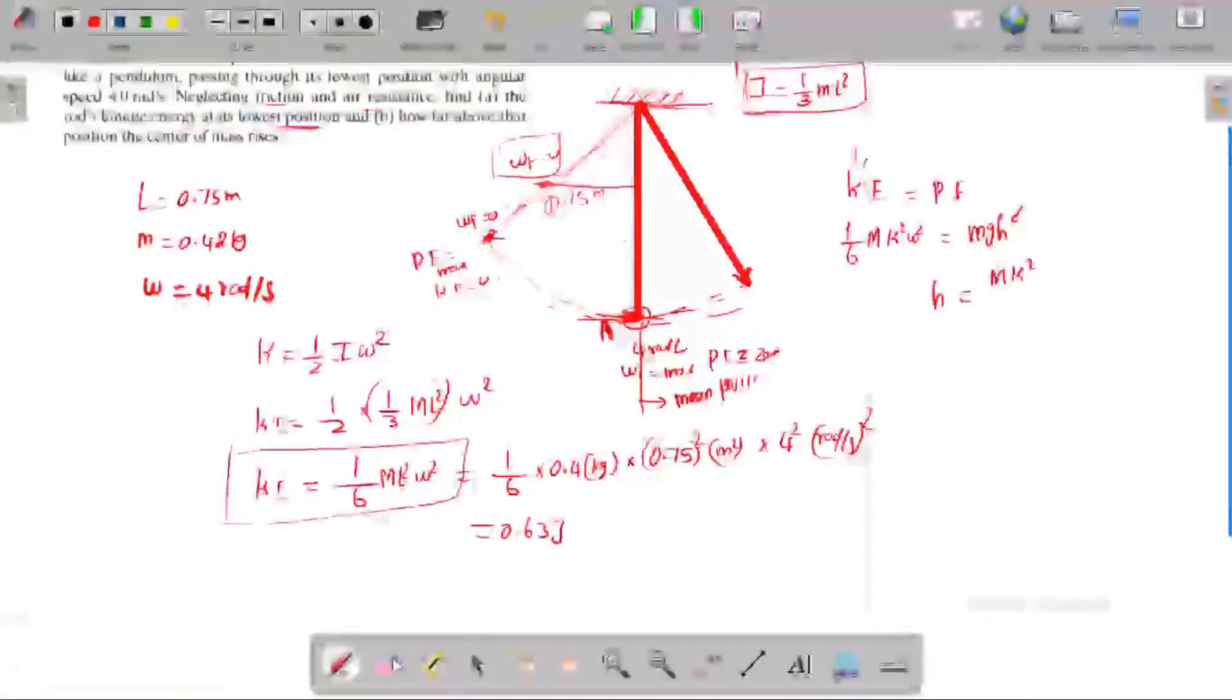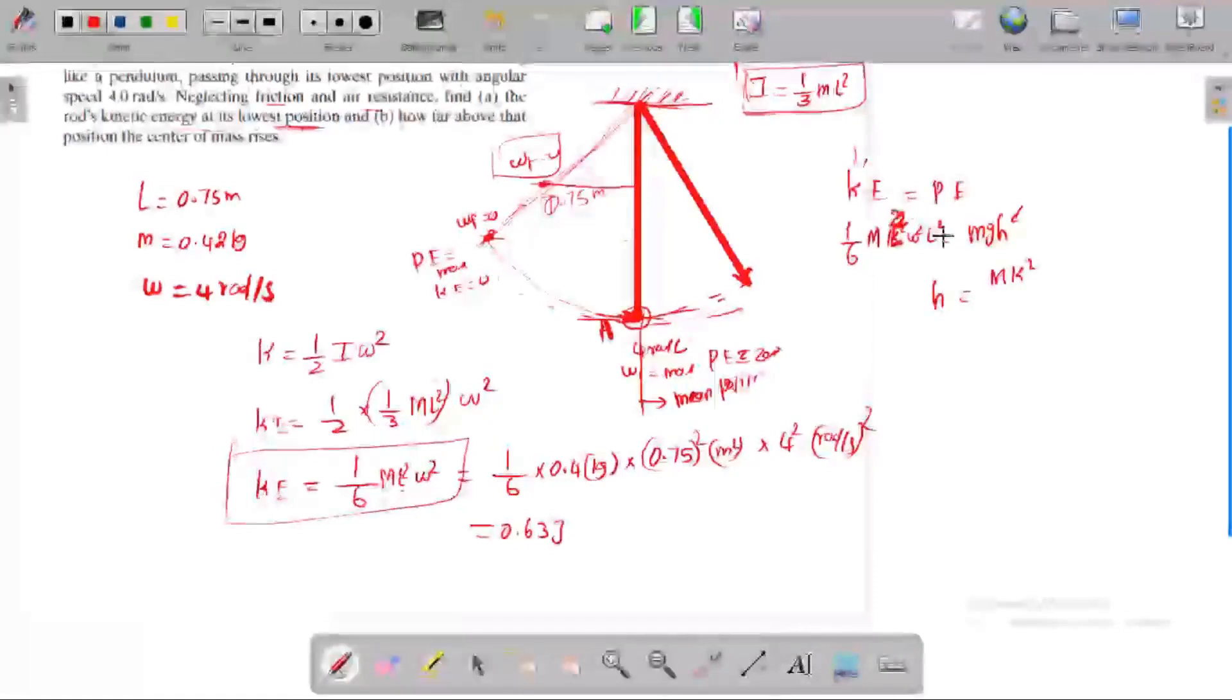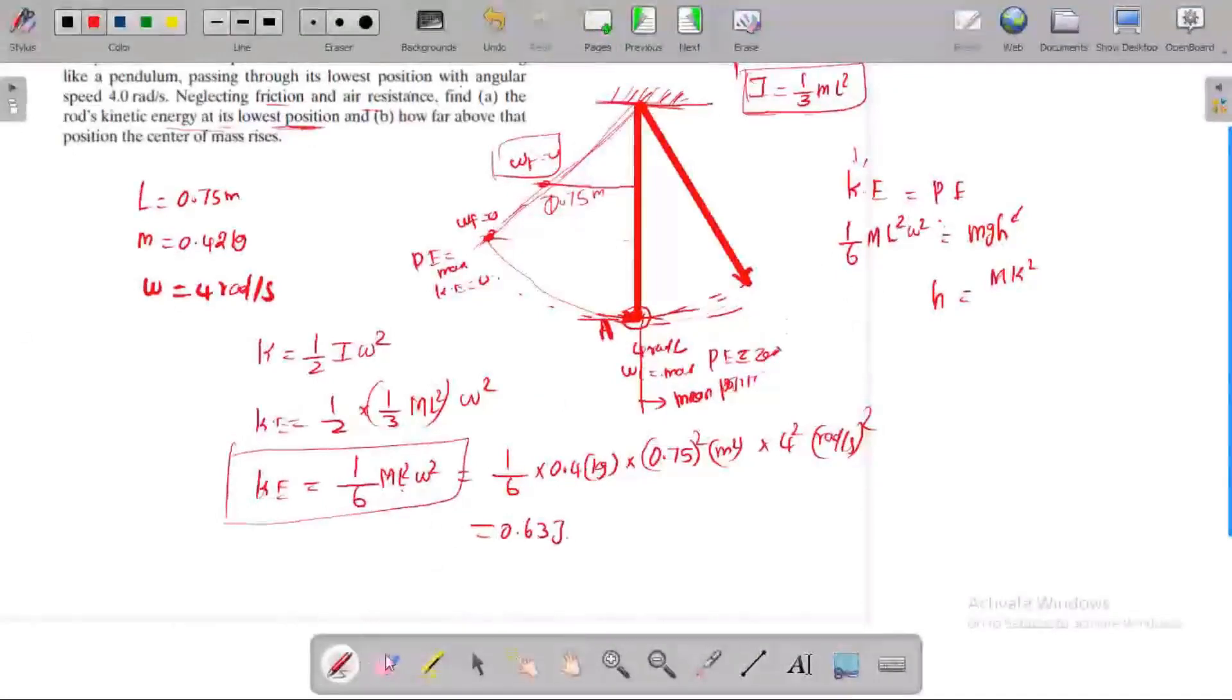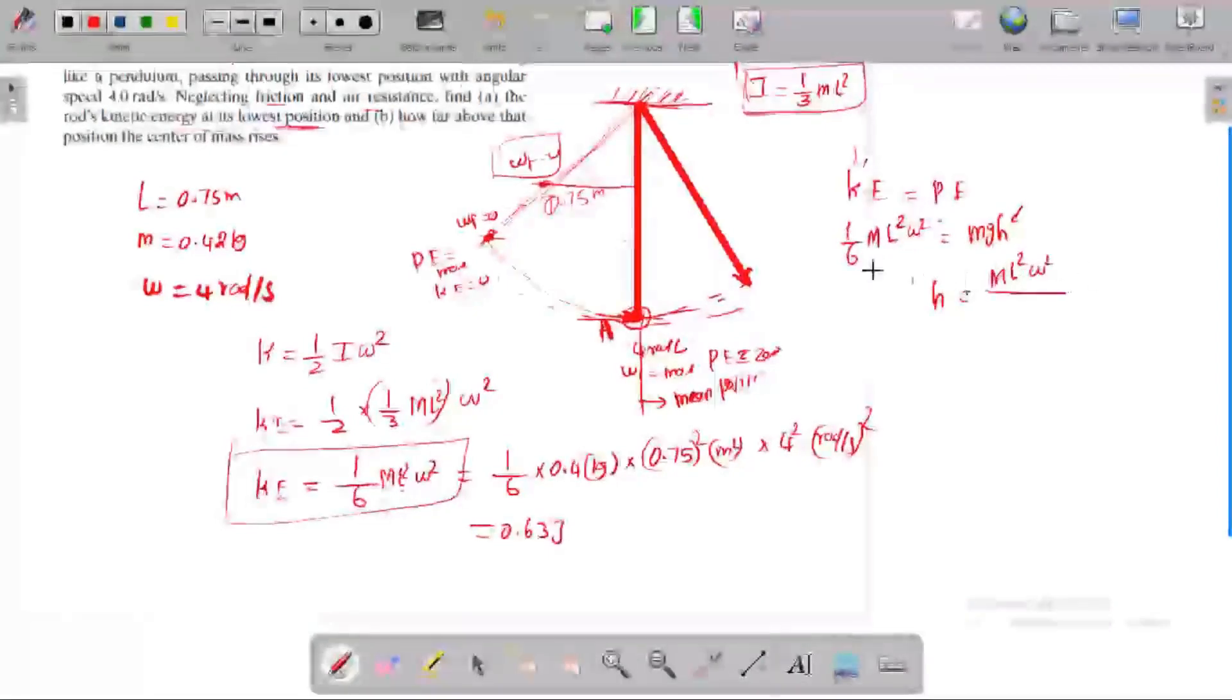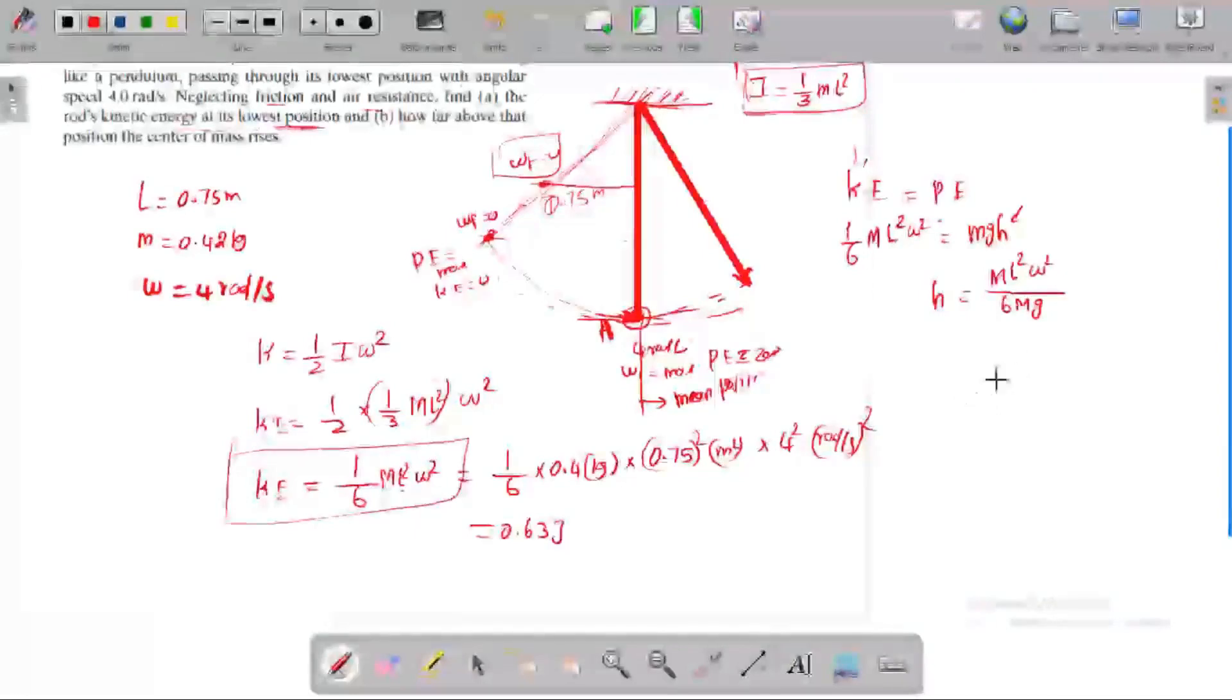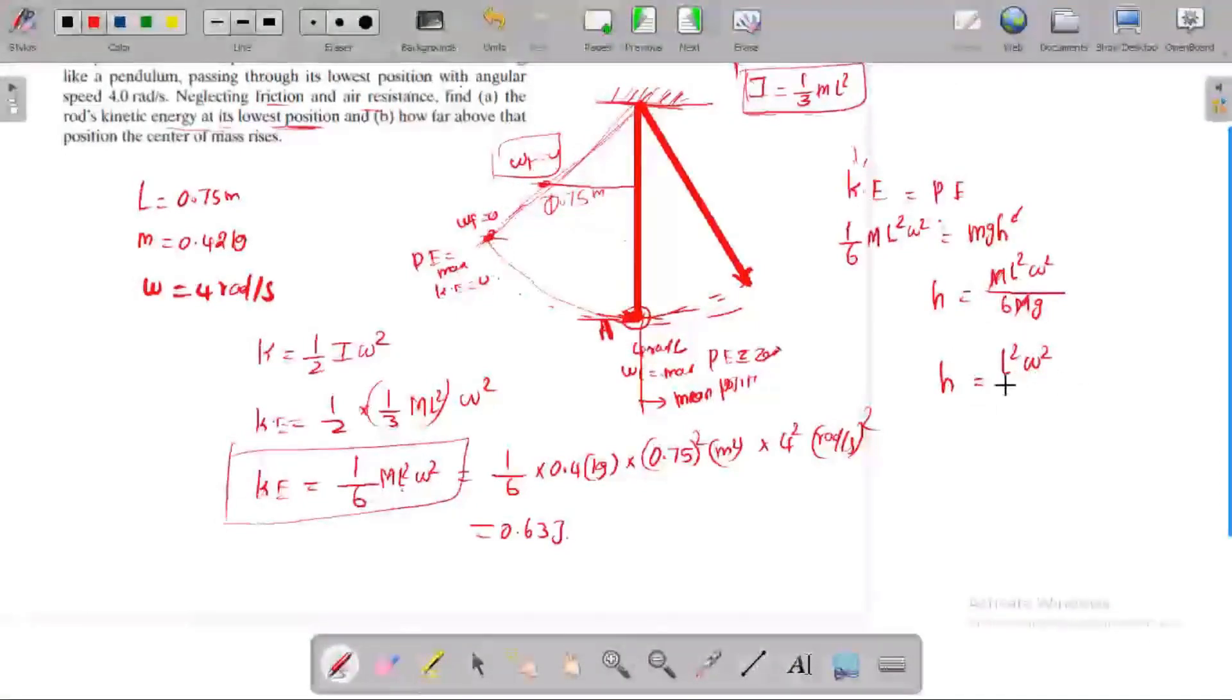One by six m L squared omega squared equals mgh. We can cancel m from both sides and rewrite the formula. Kinetic energy equals potential energy, so one by six L squared omega squared equals gh. Therefore, h equals L squared omega squared divided by 6g.